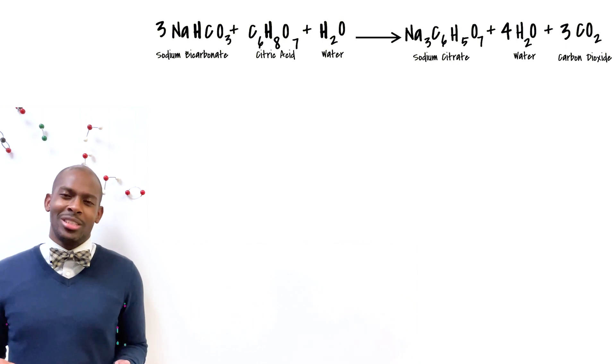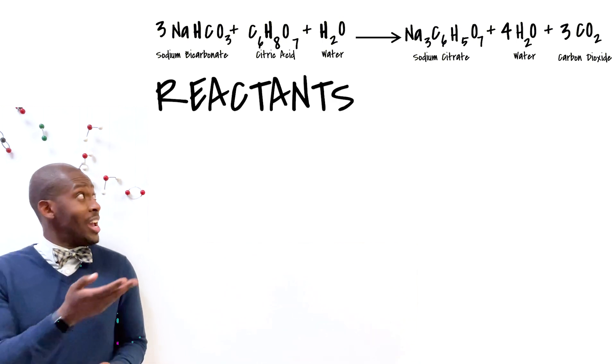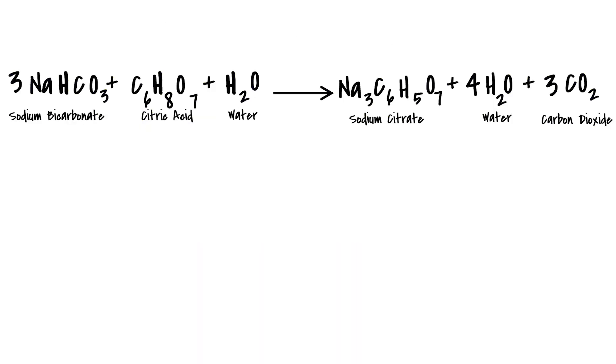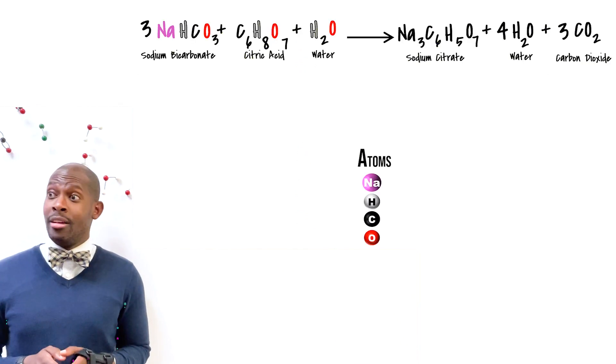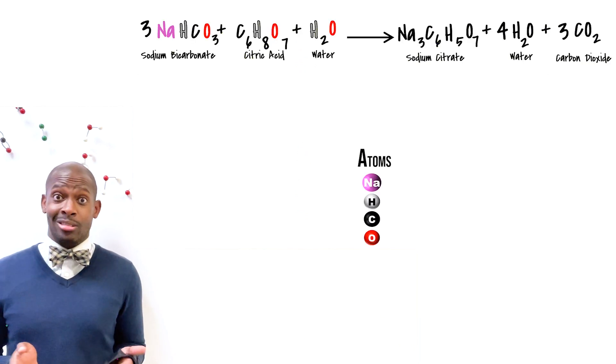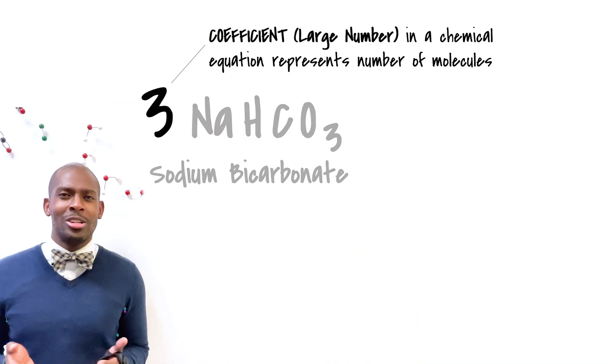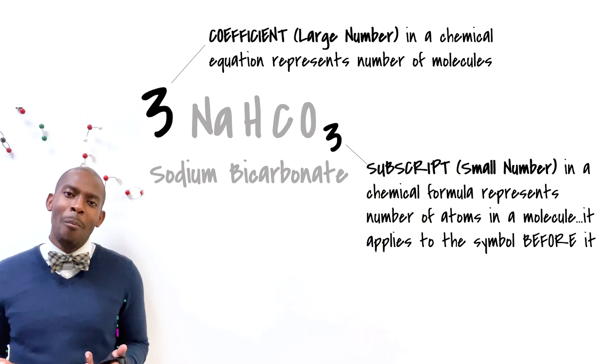Here's our equation. The only elements that we started with in the reactants are just sodium, hydrogen, carbon, and oxygen. The coefficient, which is the large number, tells us how many molecules of sodium bicarbonate we had.